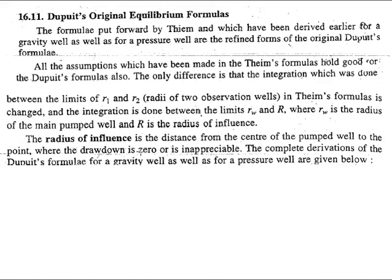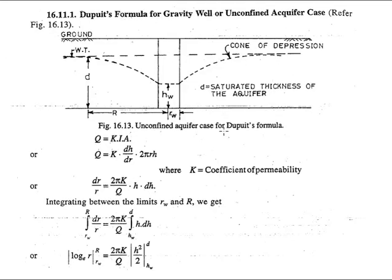If you draw a circle over here, that will be a circle of radius R, so that is basically the radius of influence. And Rw is the radius of the well. So if you know both of these things then we can integrate and determine the formula originally given by Dupuit.